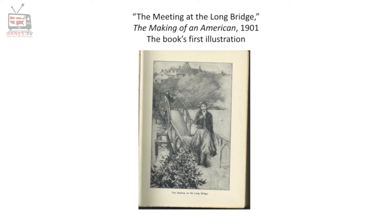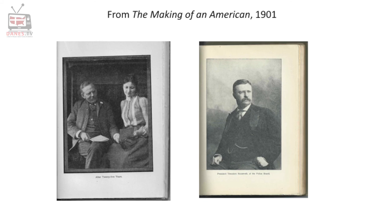Riis left Denmark not because of political oppression or poverty but for love. As a teenager he had developed a crush on Elizabeth Gortz, the ward of the wealthiest man in Ribe. He rashly decided that if he could go to America and make good he would marry her. Against all odds his plan worked — it took him five years to succeed. She had been disowned by her guardian and was still unmarried when he asked for her hand in 1875. The book was published in 1901, their 25th wedding anniversary, and she, as well as he, became national celebrities.